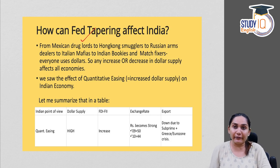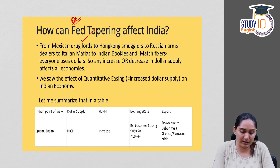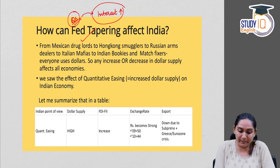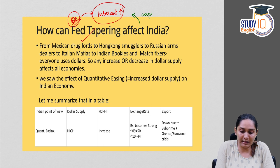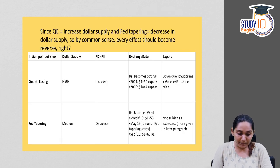Now let's see how fed tapering can affect India — this was exactly the question asked in the UPSC Prelims examination. Fed tapering means interest rates in the U.S. increase in order to reduce money supply. When interest rates in the U.S. increase, this can lead to capital flight from India, as investment in the U.S. becomes more attractive, causing investments from India to move back to the U.S.